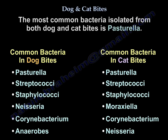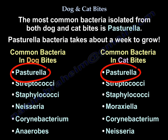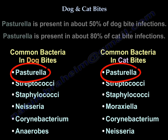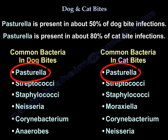The most common isolate from both cat and dog bites is Pasteurella, which takes about a week to grow. Pasteurella is present in about 50 percent of dog bite infections and about 80 percent of cat bite infections.